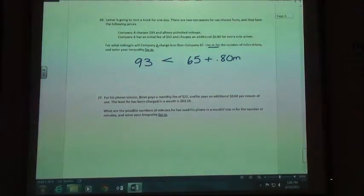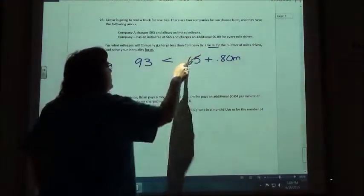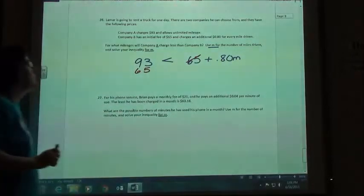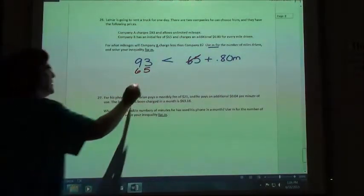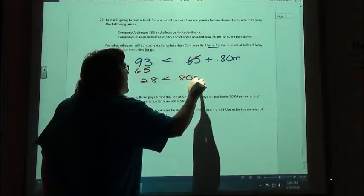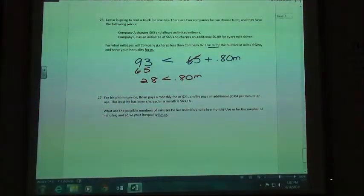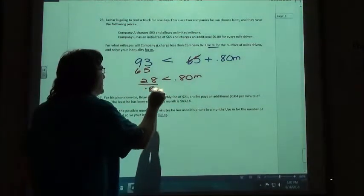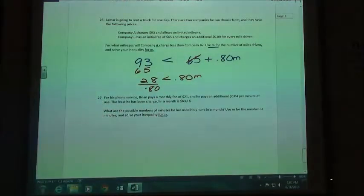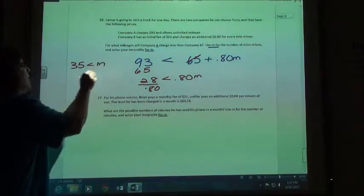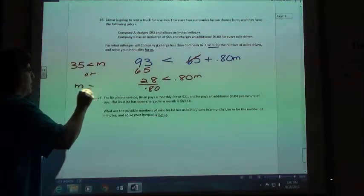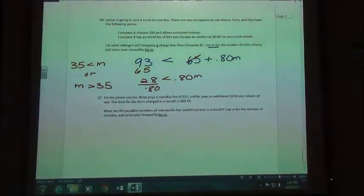So if I'm going to solve this, I'm going to subtract my 65 first and I would get 28 is less than 0.80M and then I would divide by my 80 cents so I would get 35 is less than M or M is greater than 35 just because it makes more sense. If I drive more than 35 miles, A is going to charge less than B.